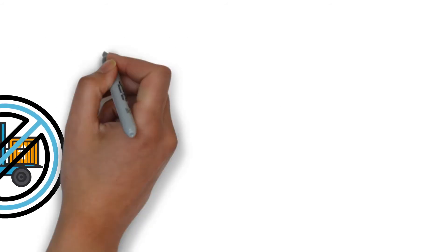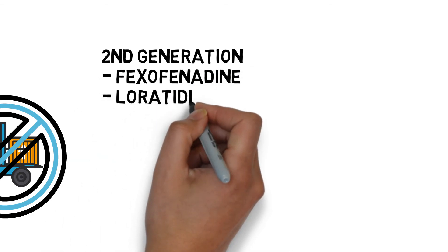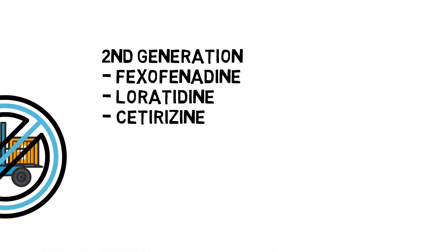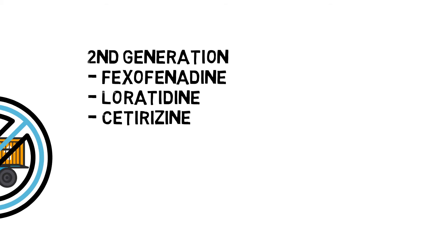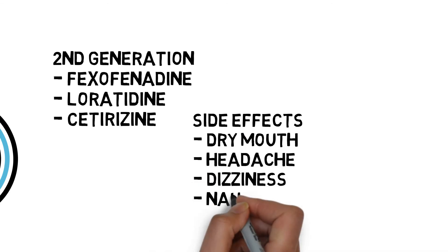Compared with the first generation, the second generation of H1 antihistamines like fexofenadine, loratadine, and cetirizine will bring fewer side effects to hay fever patients. Some other side effects of antihistamines include dry mouth, headache, dizziness, nausea, and vomiting.